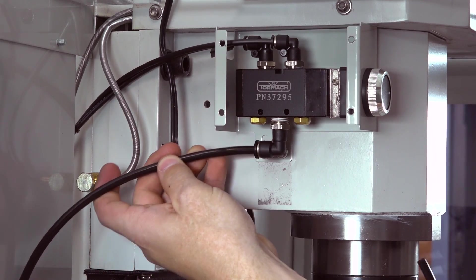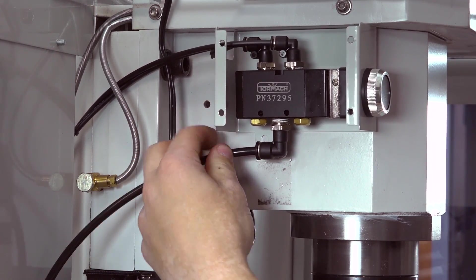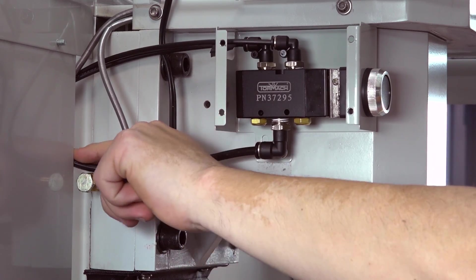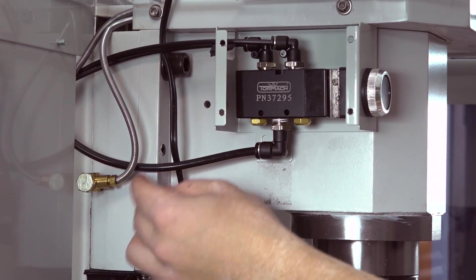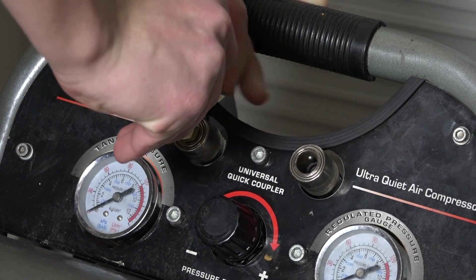Connect the quarter inch air supply line to the air supply elbow on the power drawbar button assembly. Route the loose end out the back of the enclosure. This end goes to the air compressor. Connect the quarter inch nylon line to the air compressor.